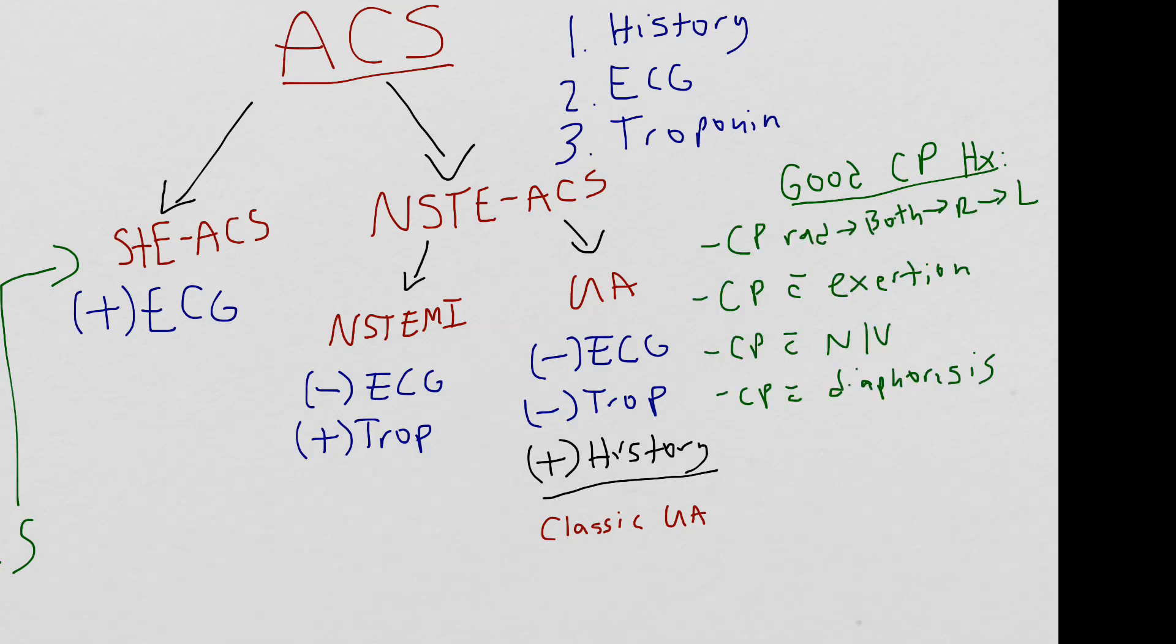Meaning does the patient have chest pain that radiates to both arms, right arm or left arm? Does the patient have chest pain that is associated with exertion or associated with nausea and vomiting or diaphoresis? And then I double back to see if the patient has any anginal equivalents.